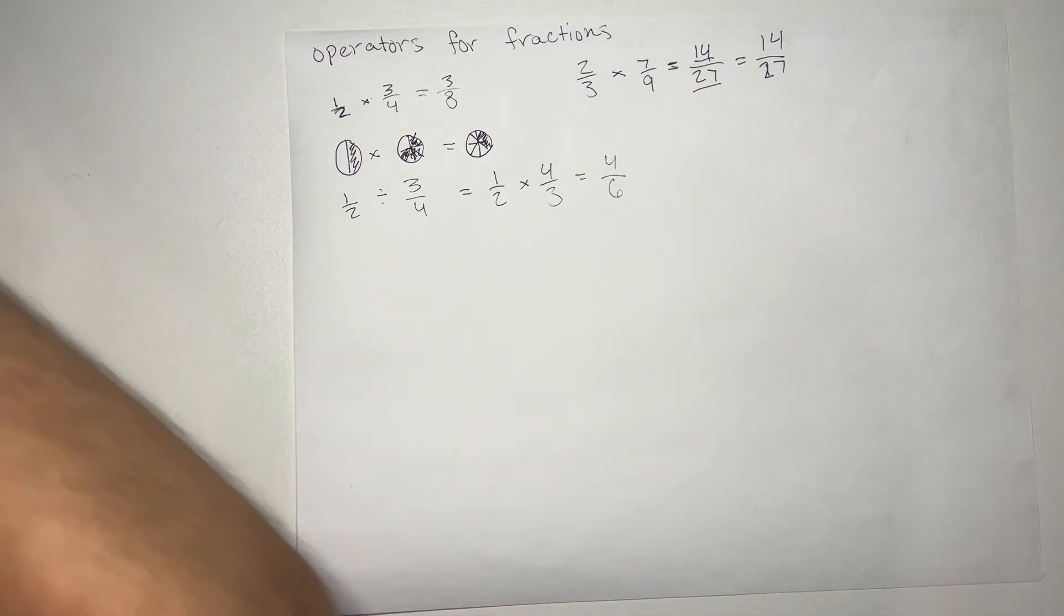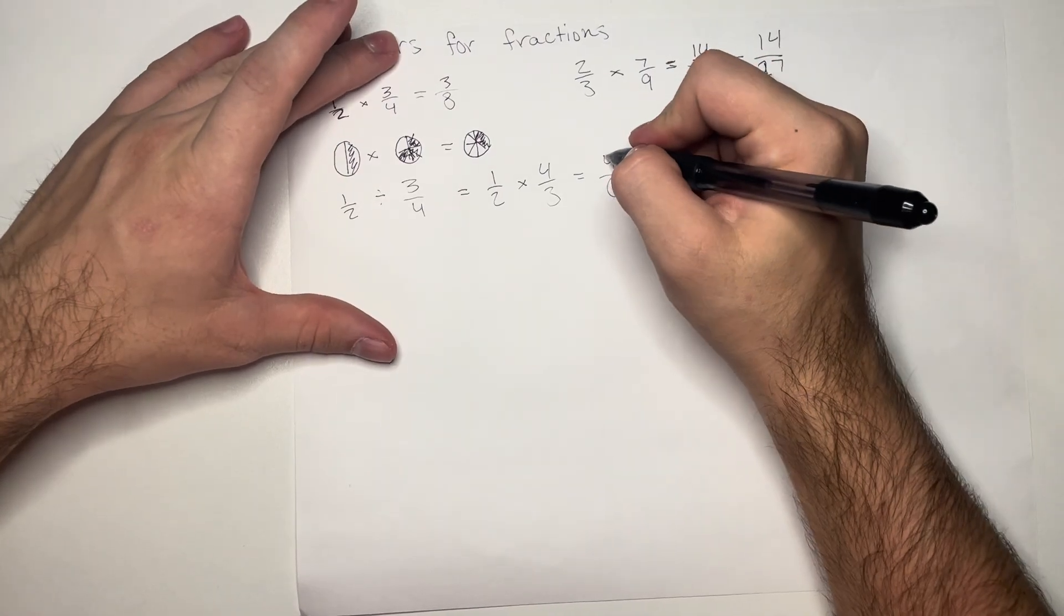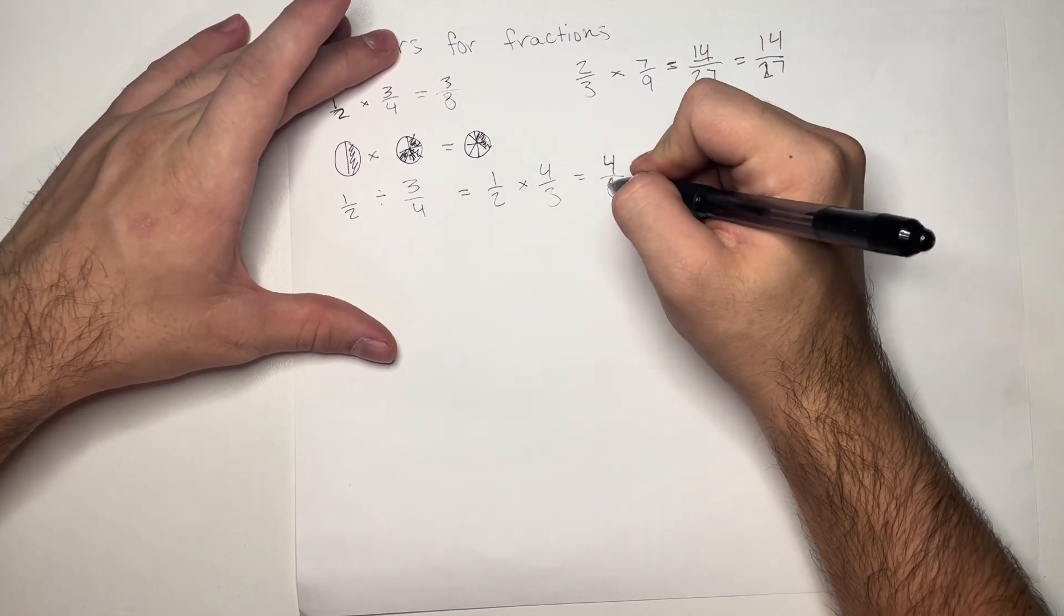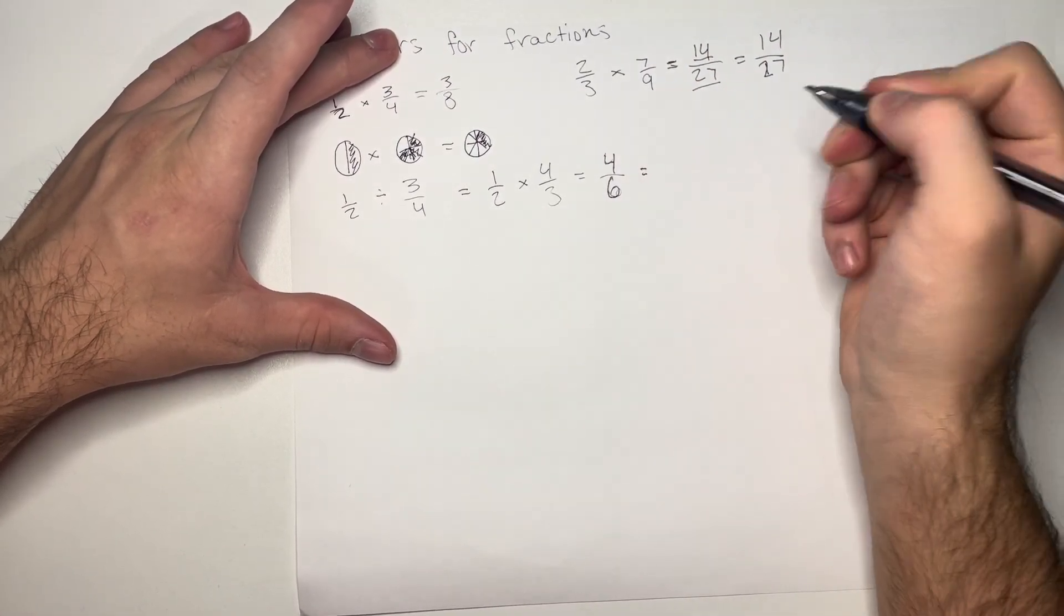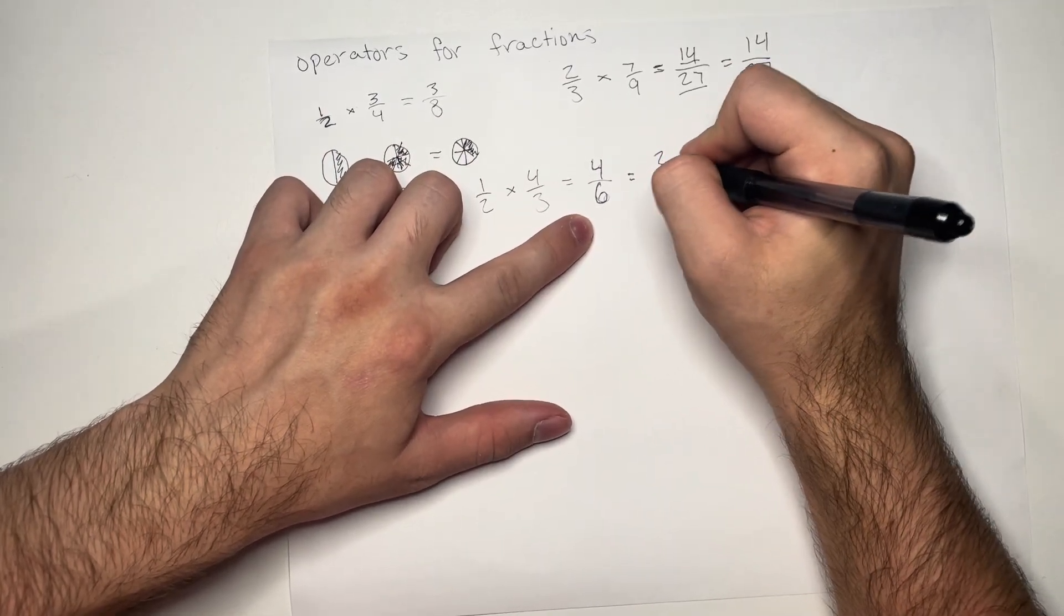Here, we can go ahead and reduce. 2 goes into both of these. So, 4 over 6 is equal to 2 over 3.